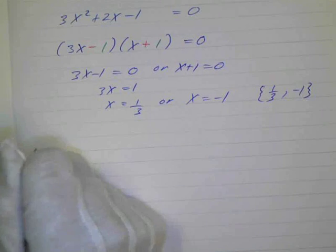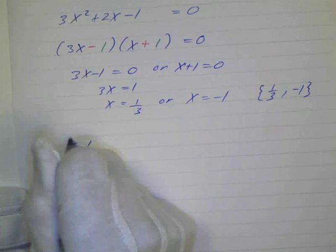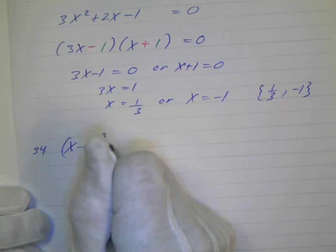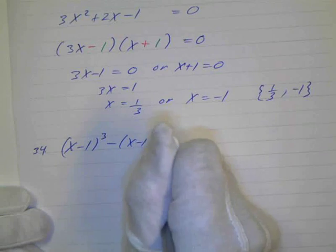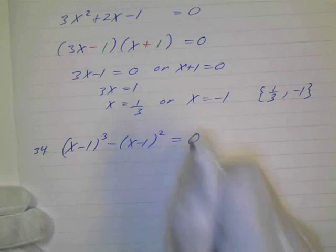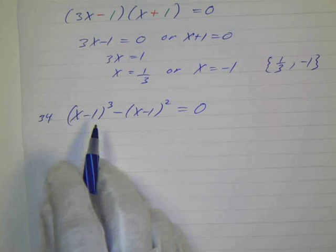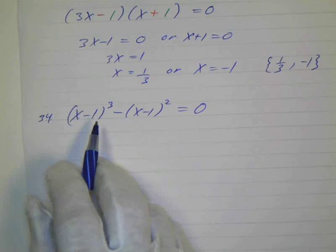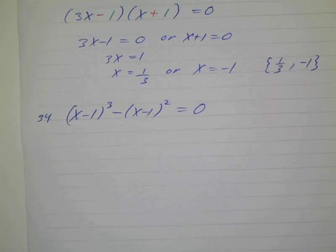And then 34. x minus 1 cubed minus x minus 1 squared equals 0. Now, you might say, oh, I'm going to have to expand this out again like we did number 30. And we can square that out. So you can expand this and square this out and simplify it.